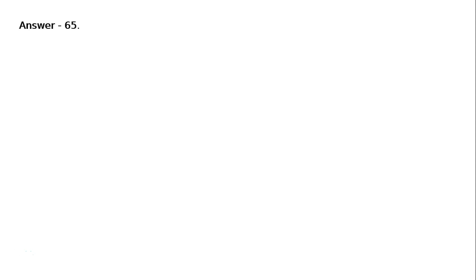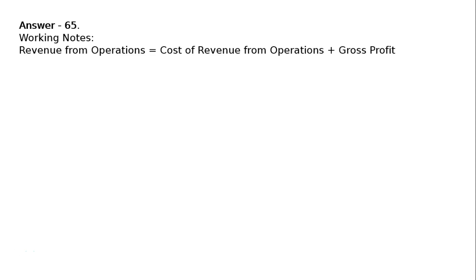This is question 65: calculate inventory turnover ratio from the following. Opening inventory and closing inventory are given, revenue from operations is given, and gross profit ratio is 25% on sales.